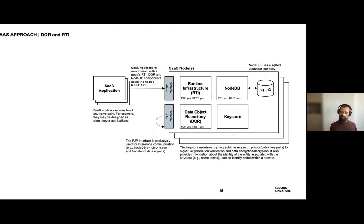The SaaS middleware is essentially a peer-to-peer system with the notion of nodes — you can have multiple nodes. One node may run on Google Cloud, another on your in-house computing cluster, another on a supercomputing center. Your models have to run in different environments, so wherever you want to run something, you have a node operating there, and the middleware takes care of the glue, making things work together.